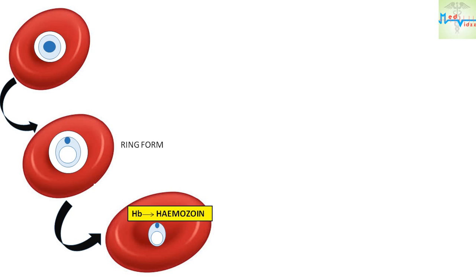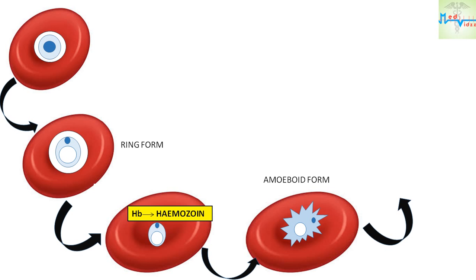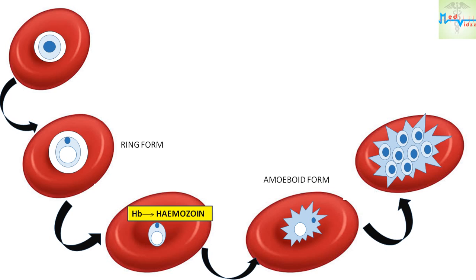The parasite does not metabolize hemoglobin completely and therefore leaves behind a hemoglobin pigment called the malaria pigment or hemozoin pigment. The appearance of malaria pigment varies in different species and is an identification feature of the type of malaria parasite. As the ring form develops, it enlarges in size, becoming irregular in shape — called the amoeboid form or late trophozoite form. When the amoeboid form reaches a certain stage of development, its nucleus starts dividing by mitosis, followed by division of cytoplasm, to become the mature schizont.